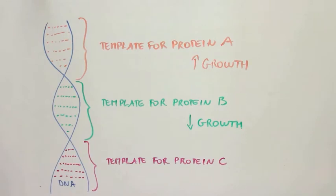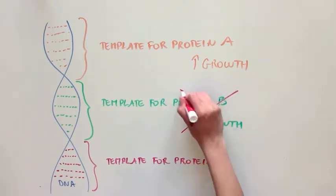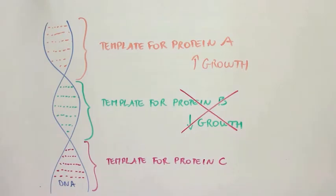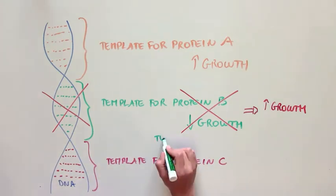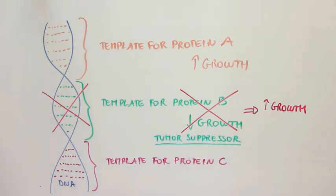So you can see that it would be advantageous for a cancer cell to get rid of proteins that prevent cell growth, so as to allow the cell to grow and divide longer. Cancer cells do this by deleting the DNA template that makes these anti-growth proteins. We call these types of proteins tumor suppressors, because they prevent tumors from growing.